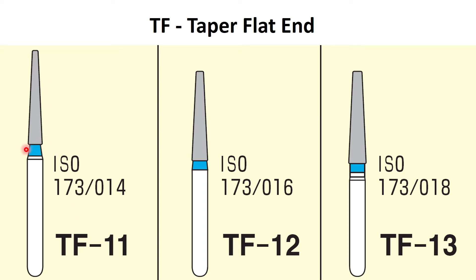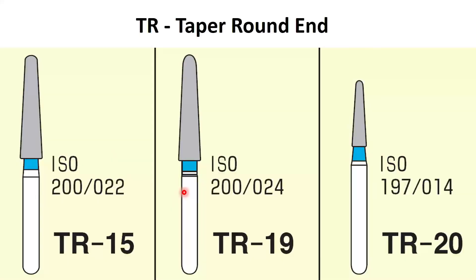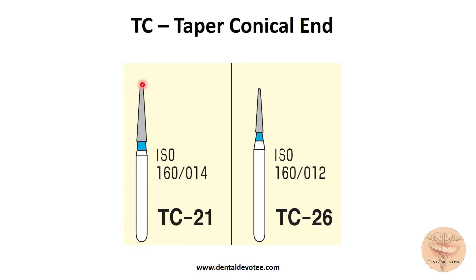The blue color in the neck signifies standard grittiness. TR series of burrs have a rounded end as TR stands for taper round end. These are further identified by their unique ISO number and model number. TC stands for taper conical burrs which are as shown in the diagram here.